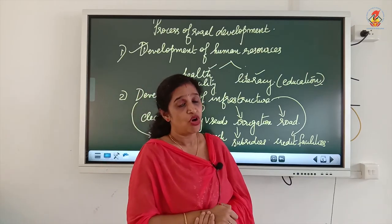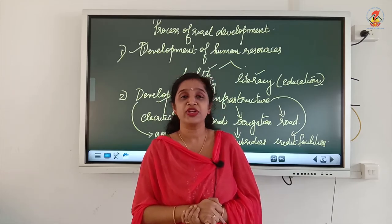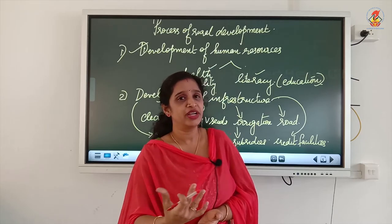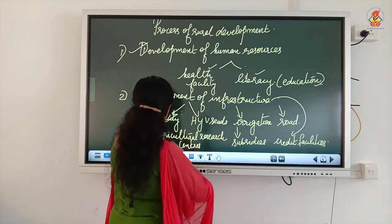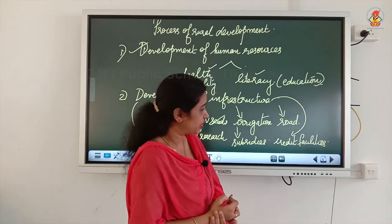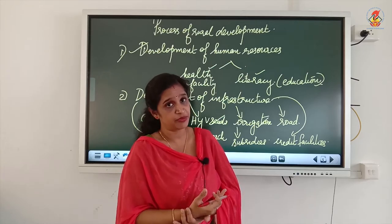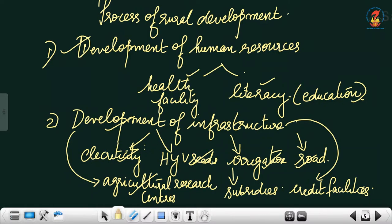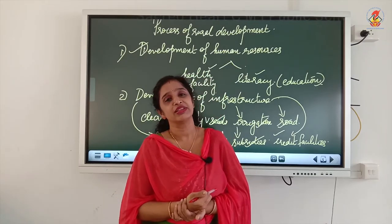Point number two is development of infrastructure — all kinds of infrastructure facilities, especially in the agricultural sector, since majority of people depend on agriculture. Farmers should be given enough support to improve in the agricultural sector. For example: electricity, HYV seeds, irrigation facilities, roads, agricultural research centers, subsidies for fertilizers and seeds, and credit facilities. All these are the basic infrastructure facilities that have to be provided for farmers in rural areas.